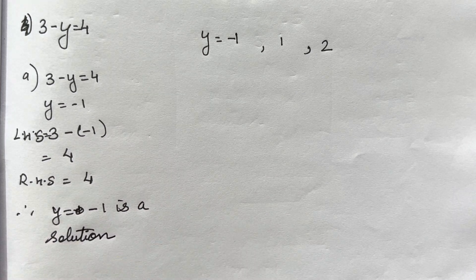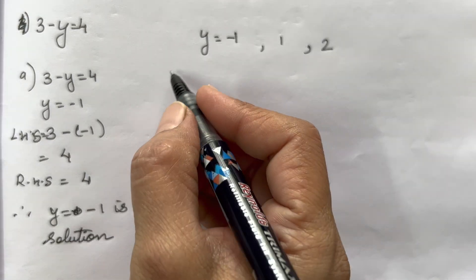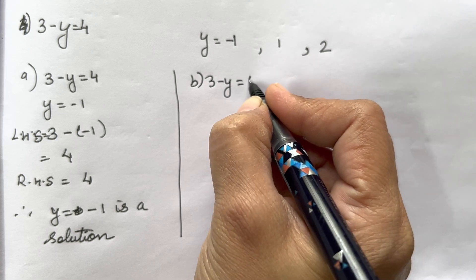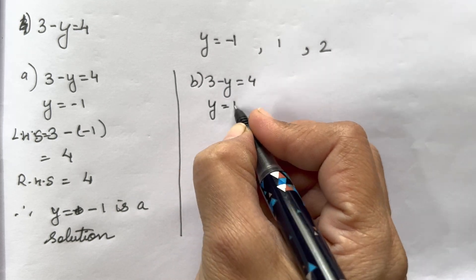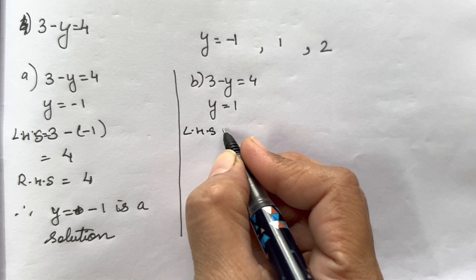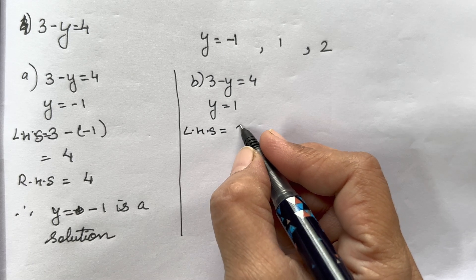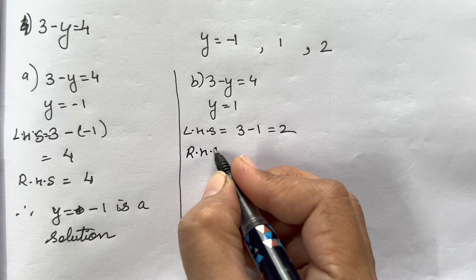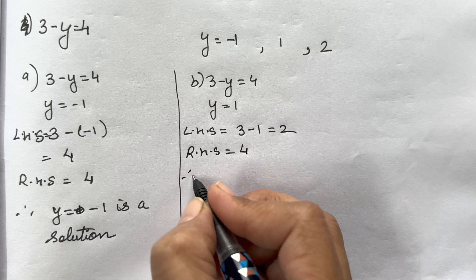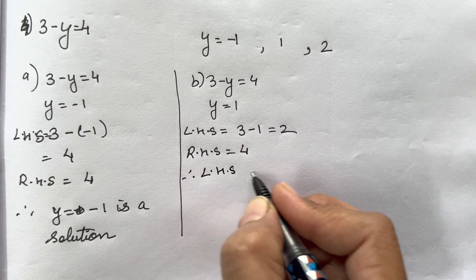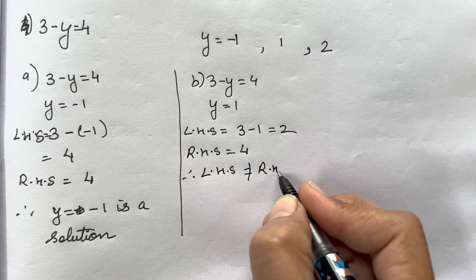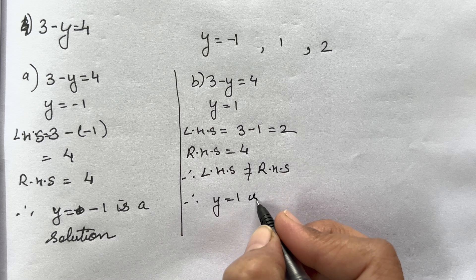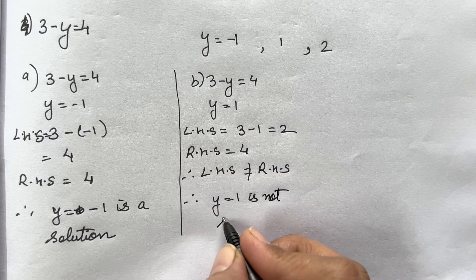Next: 3 - y = 4 with y = 1. Left Hand Side is 3 - 1 = 2. Right Hand Side is 4. Therefore both are not equal, and y = 1 is not a solution.